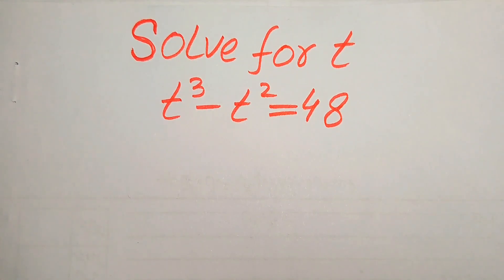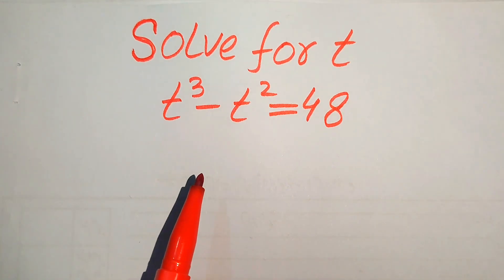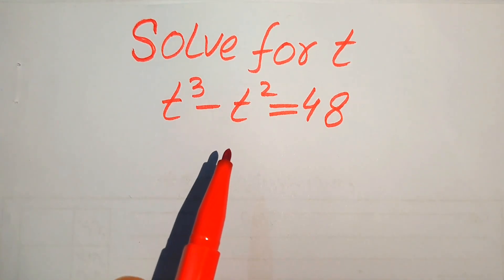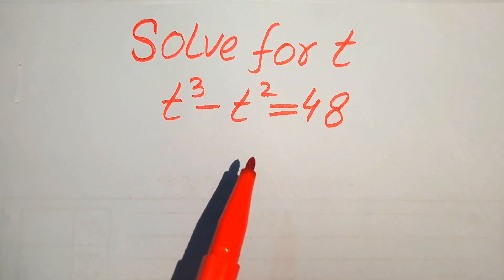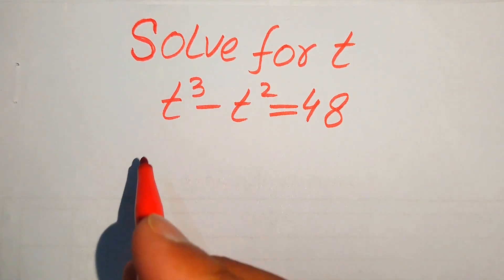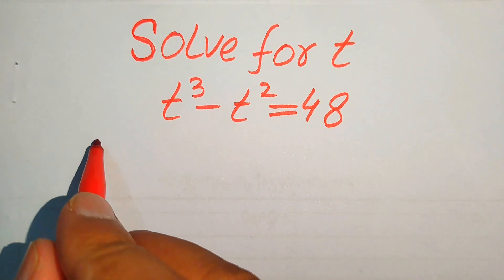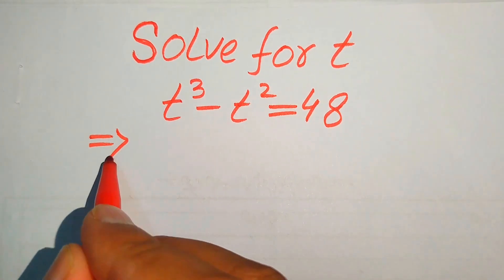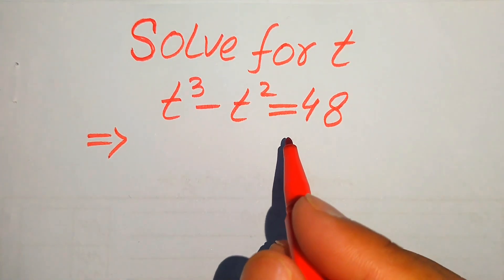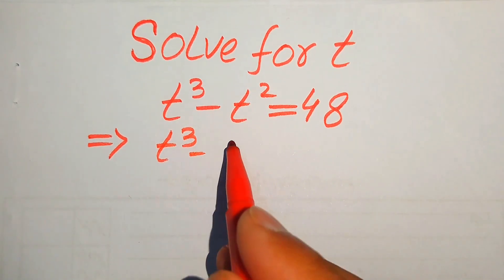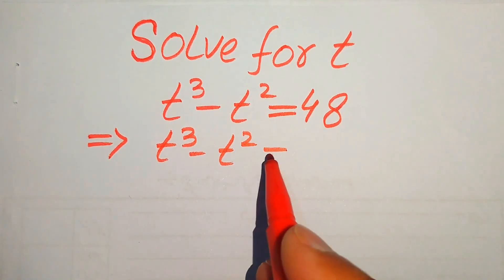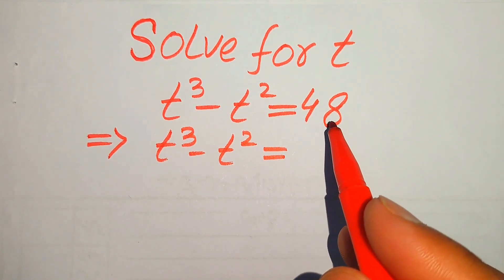Hello everyone. How to solve this problem for the values of t, if we have t cubed minus t squared equals to 48. We solve this problem for the values of t. We need to focus on the right hand side, where we have 48, so we rewrite this equation as t cubed minus t squared equal to 48.